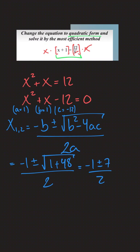And this will yield x1, which is going to be negative 4, and x2, which is 3. And that's the solution.